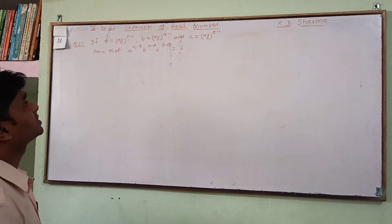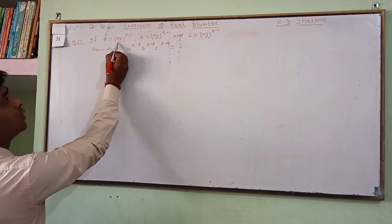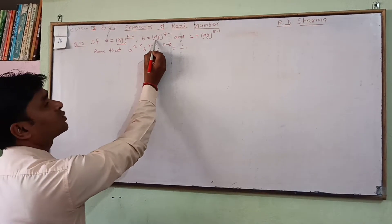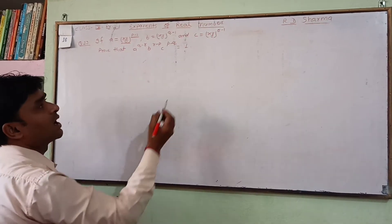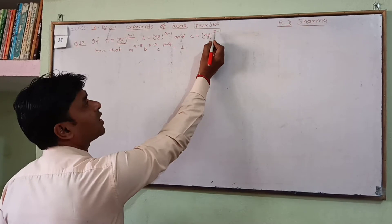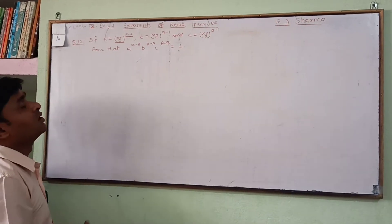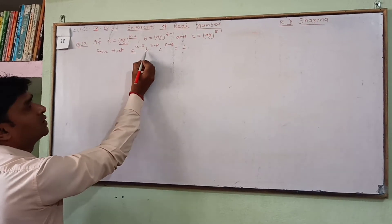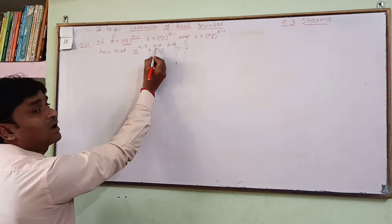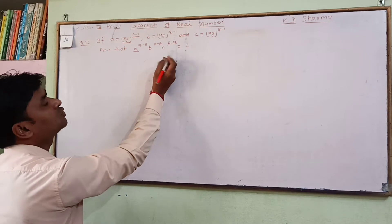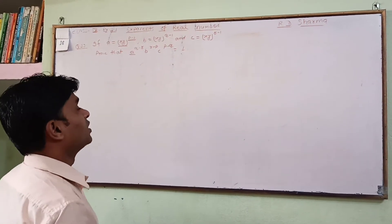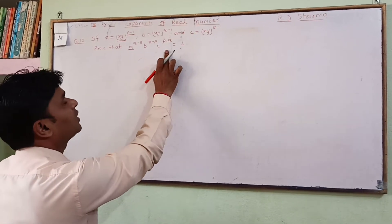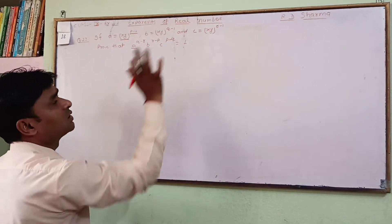The question is given: if A is equal to xy to the power p minus 1, B is equal to xy to the power q minus 1, and C is equal to xy to the power r minus 1. We have to prove that A to the power q minus r, into B to the power r minus p, into C to the power p minus q is equal to 1.